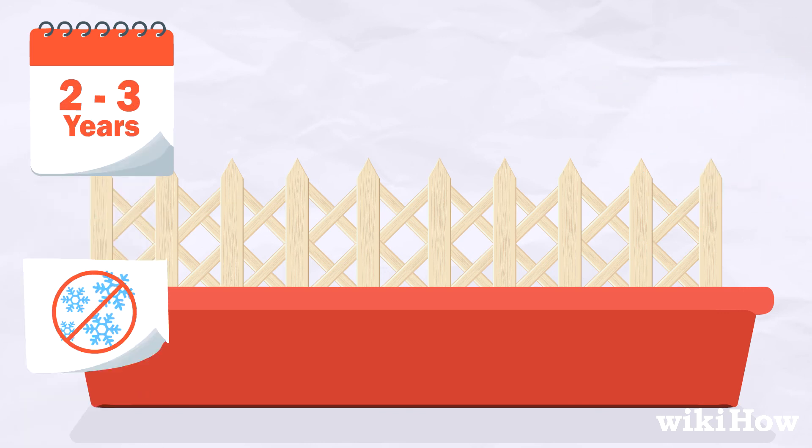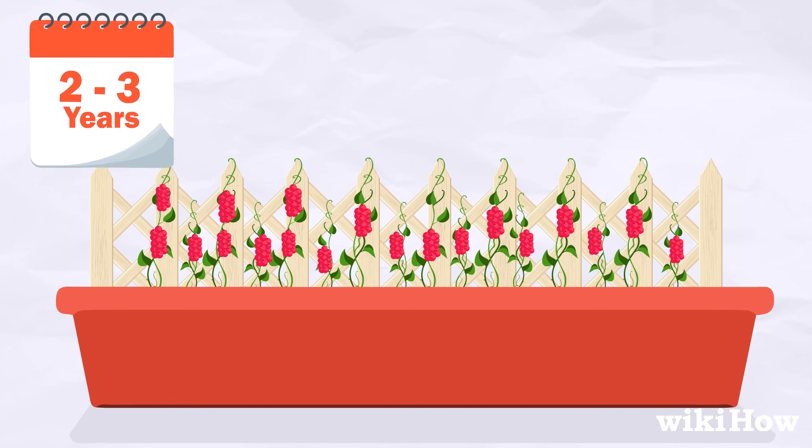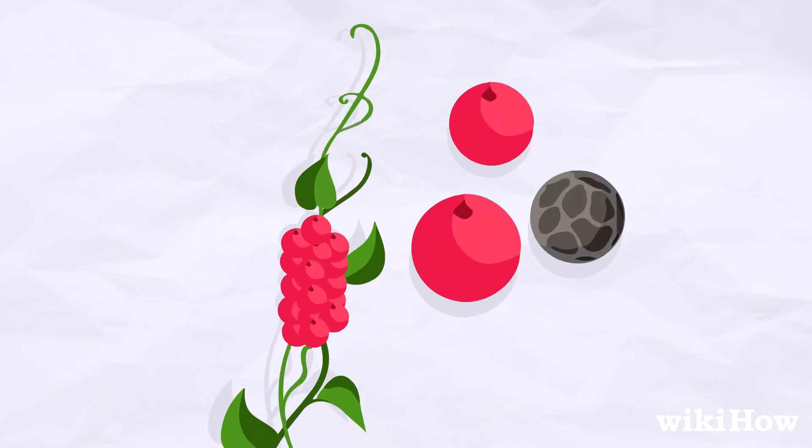After 2 to 3 years, your black pepper plant will start producing peppercorn berries that you can harvest and turn into ground black pepper.